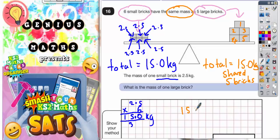So 15 divided by 5, you can do that one in your head, is going to be 3 kilograms per brick.